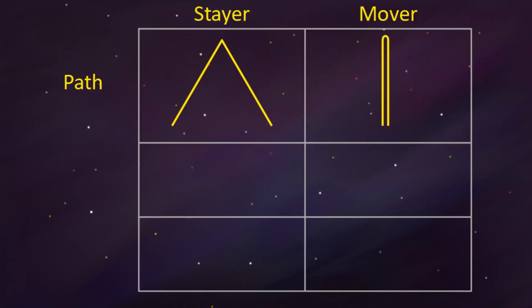So the path is longer in the stayer's reference frame, but the speed of light is the same for both of them. Since time is distance over velocity, it means that the photon will take more time to complete the longer path.